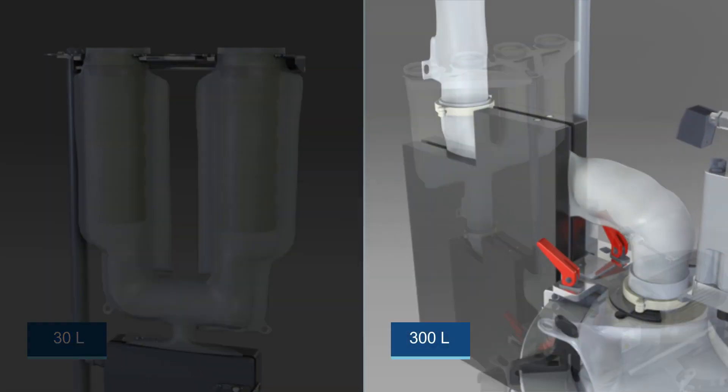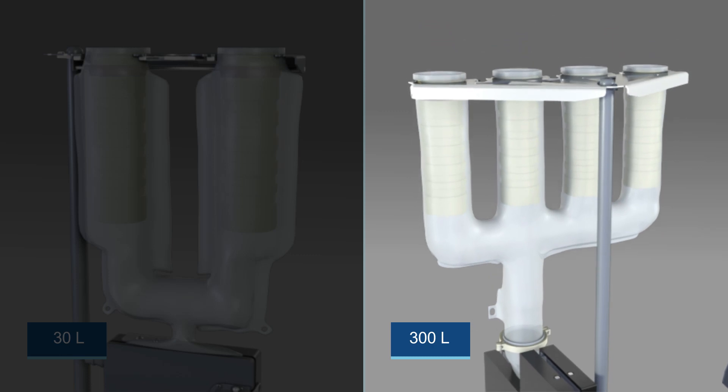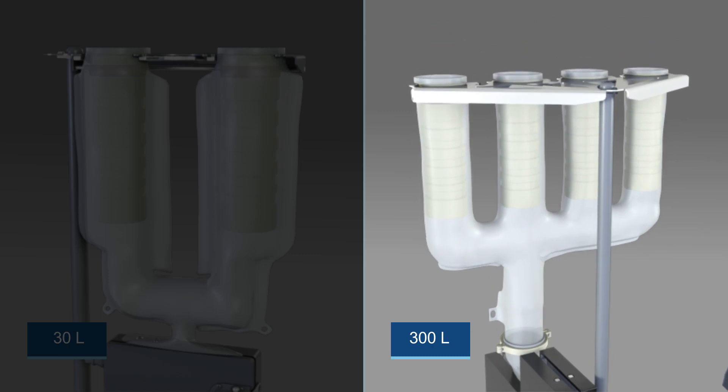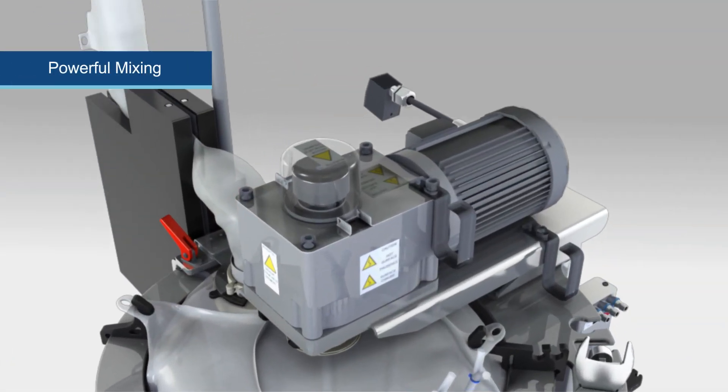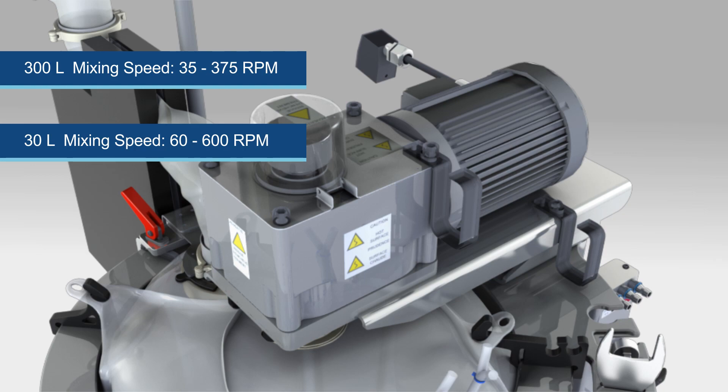The 300-liter SUF accomplishes this by using a 3-inch exhaust port attached to a high-flow filter bag that can be configured with up to 4 filters. The powerful AC motor supports mixing rates ranging from 35 to 600 RPM depending on the size of the fermenter vessel.